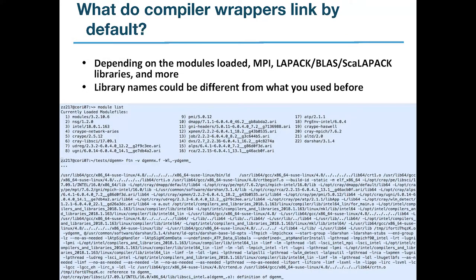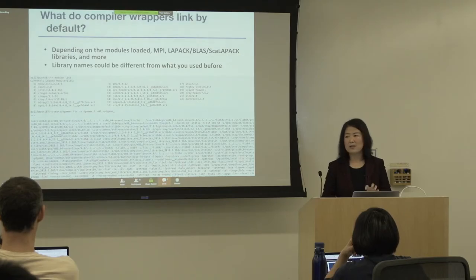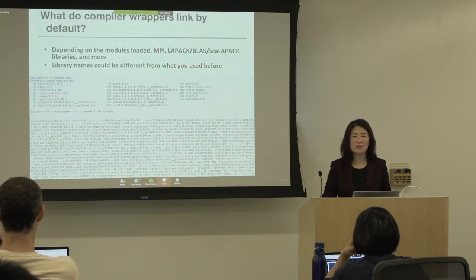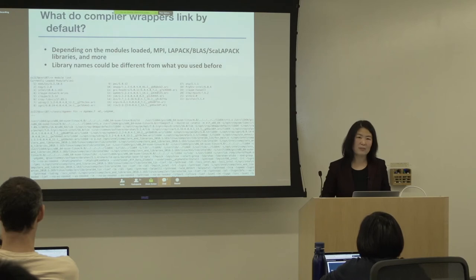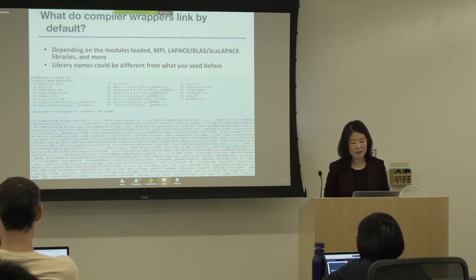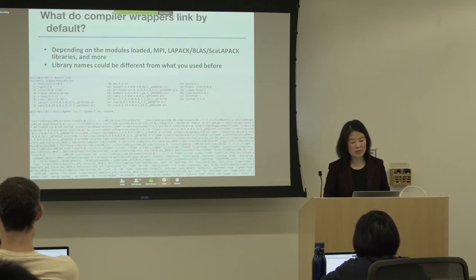Here's a useful trick: there is a linker option -Wl,-y followed by a symbol name. This option will be very useful to check, especially when multiple libraries support the same routines or functionalities, and you want to see where exactly the symbols come from. This option can tell you where a symbol is coming from.